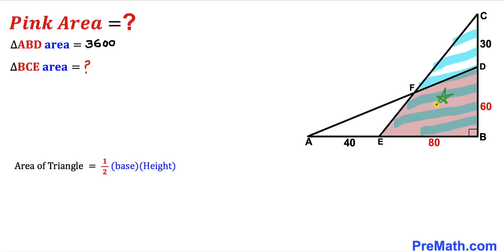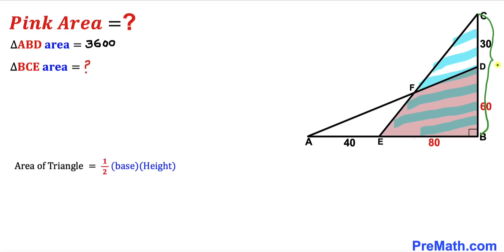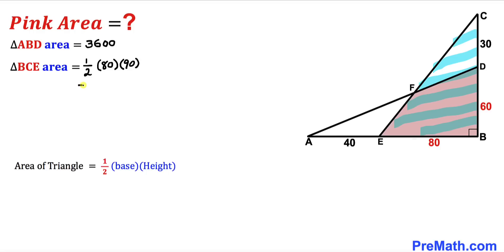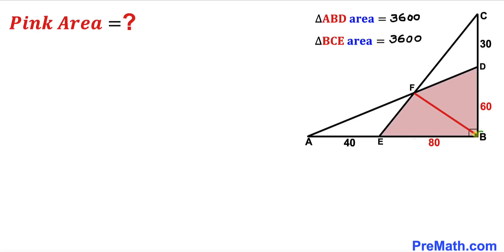Now let's focus on the other right triangle BCE and calculate its area using the same formula: one-half times base times height. The base of this triangle is 80 units, and the height is 30 plus 60, which makes 90 units. So the area of triangle BCE is one-half times 80 times 90, which simplifies to 3600 square units.